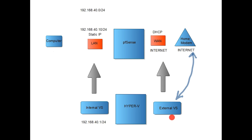The WAN is going to be connected to the external virtual switch of Hyper-V. So in Hyper-V we need two virtual switches: an internal virtual switch and an external virtual switch. PFSense will need two network adapters — one LAN and one WAN. The external virtual switch of Hyper-V will be connected to our home network; you can use your Wi-Fi card or your Ethernet card, whatever is available on your computer.